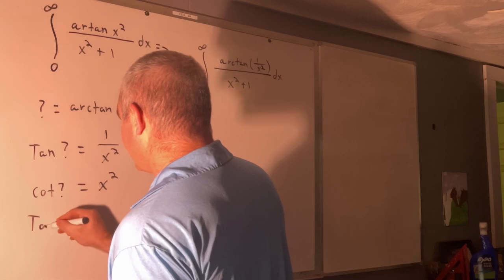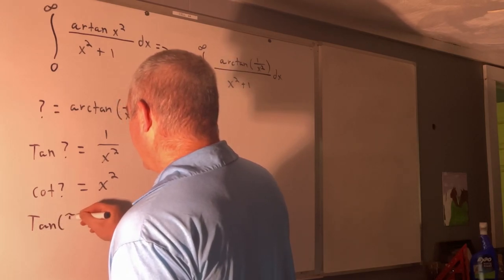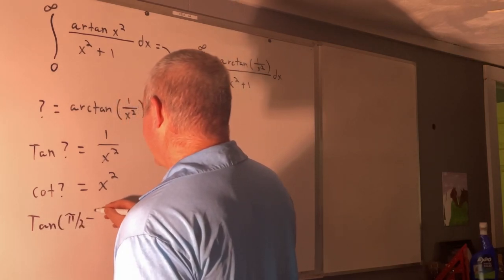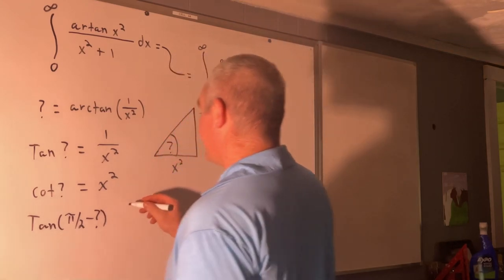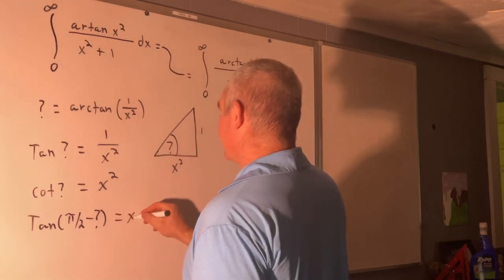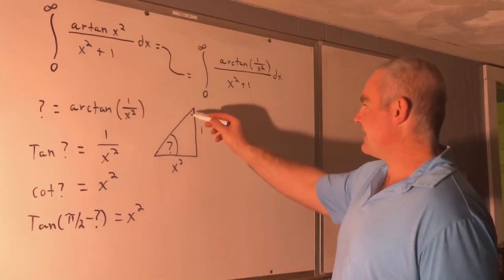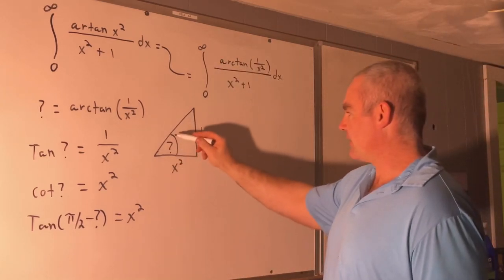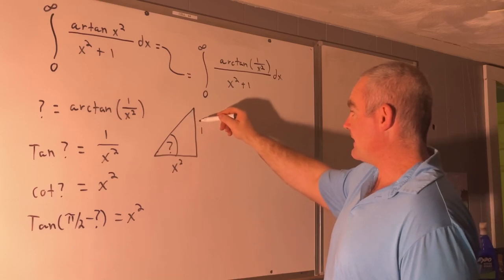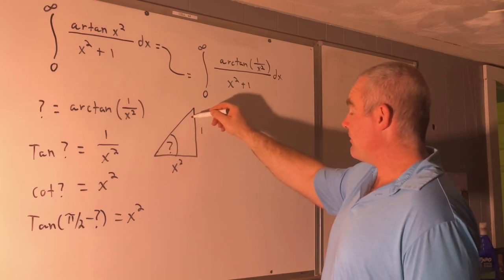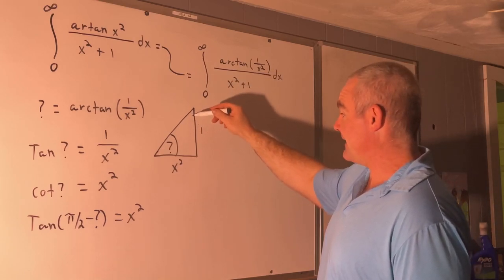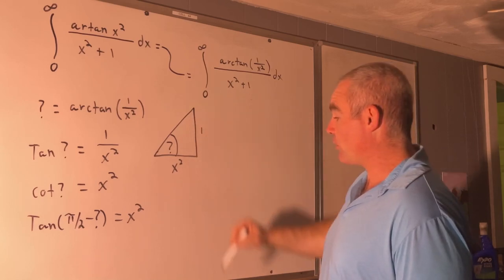So this means that tangent of pi over 2 minus question mark, that's our theta, is still equal to x squared. And you can kind of see that from here. If this is our angle question mark, then this angle right here is pi over 2 minus question mark. And the tangent of that would be x squared over 1.